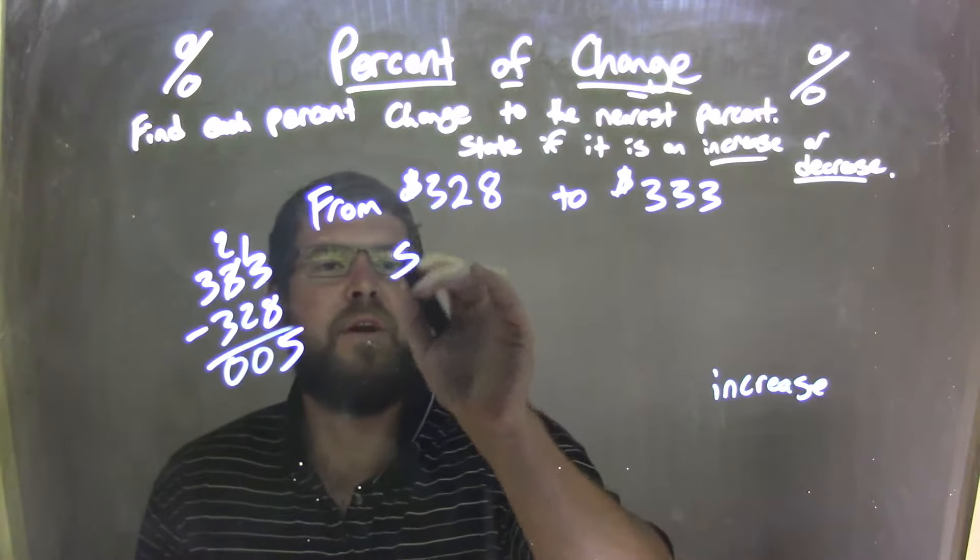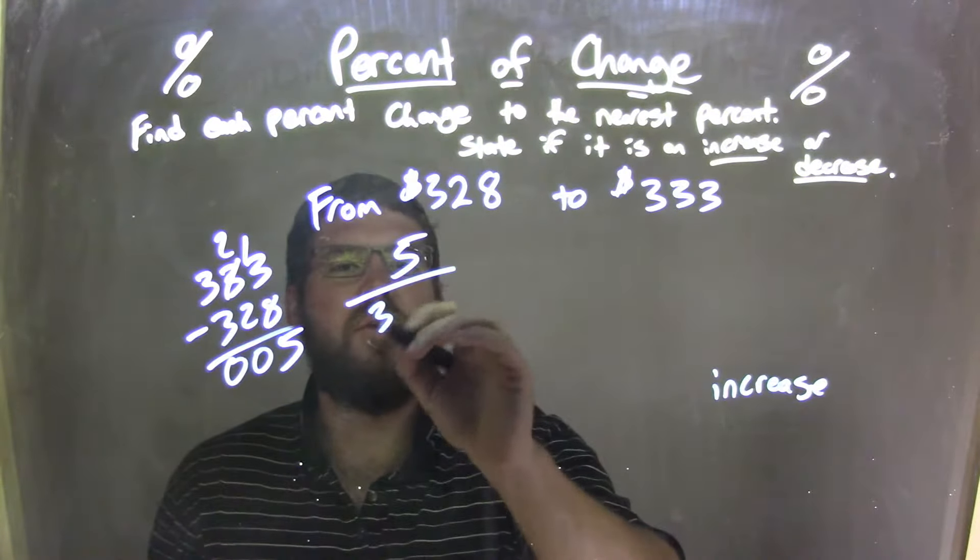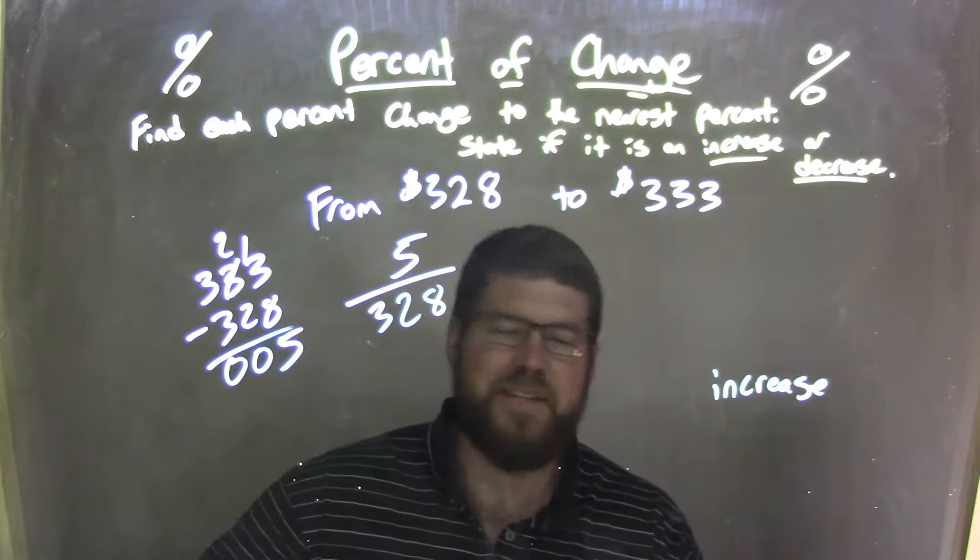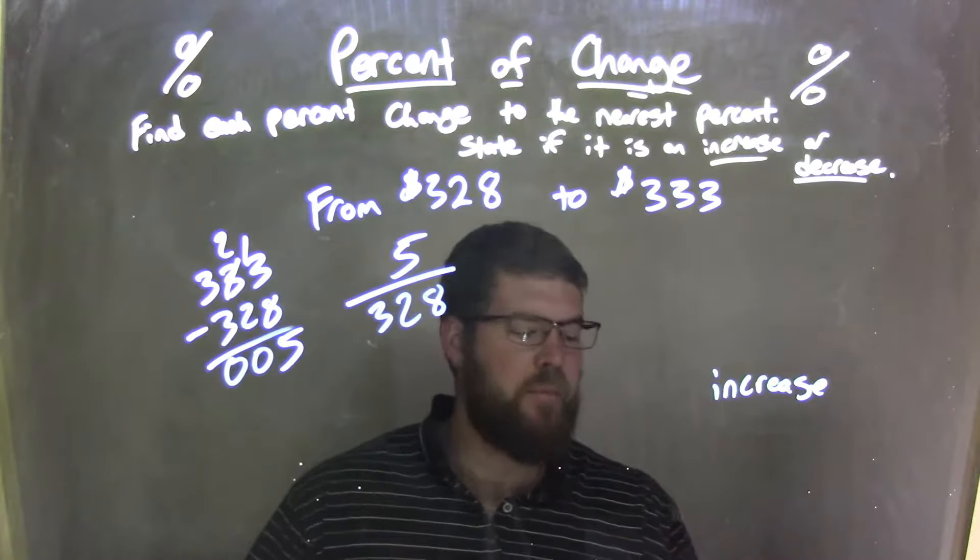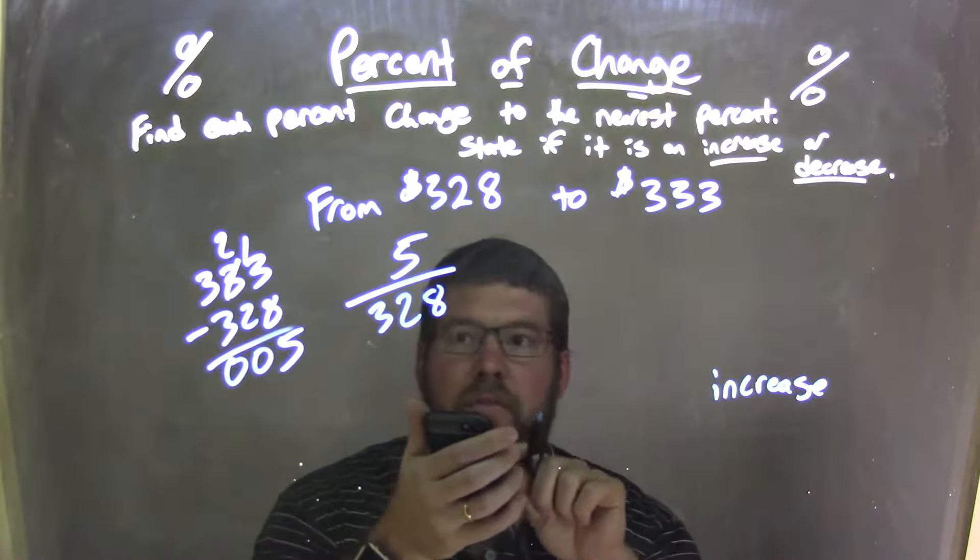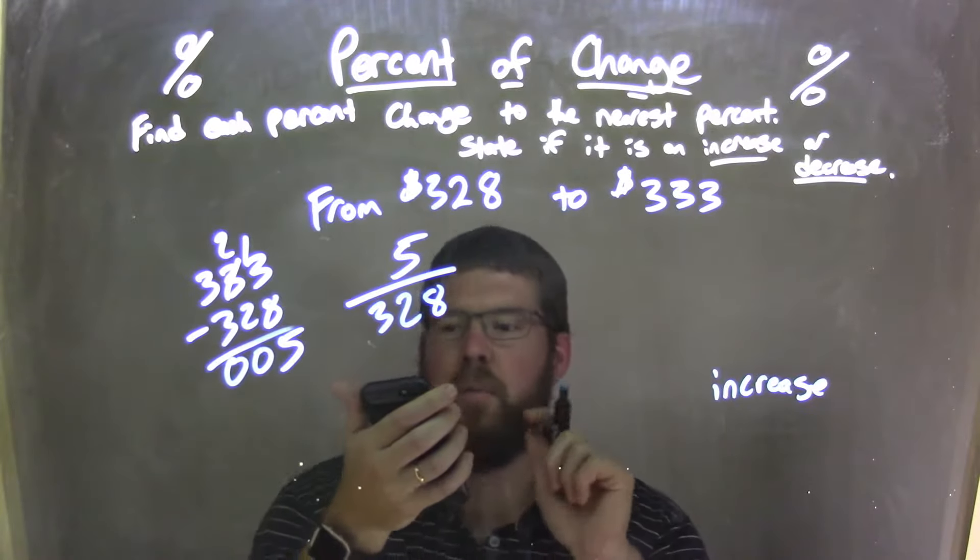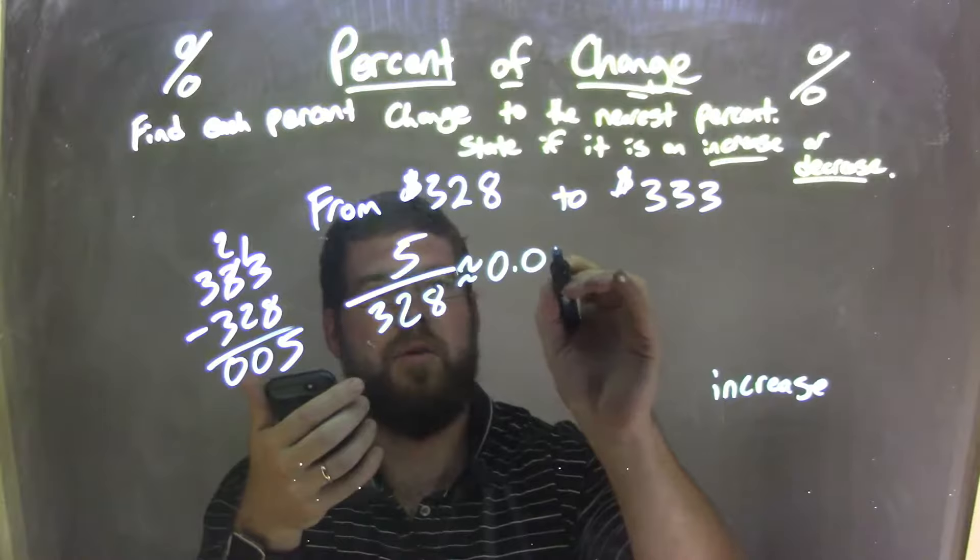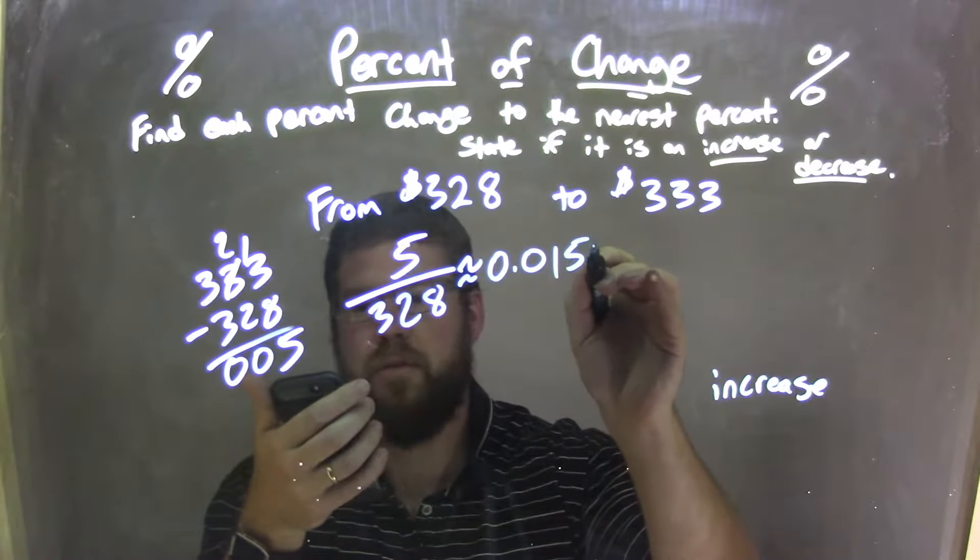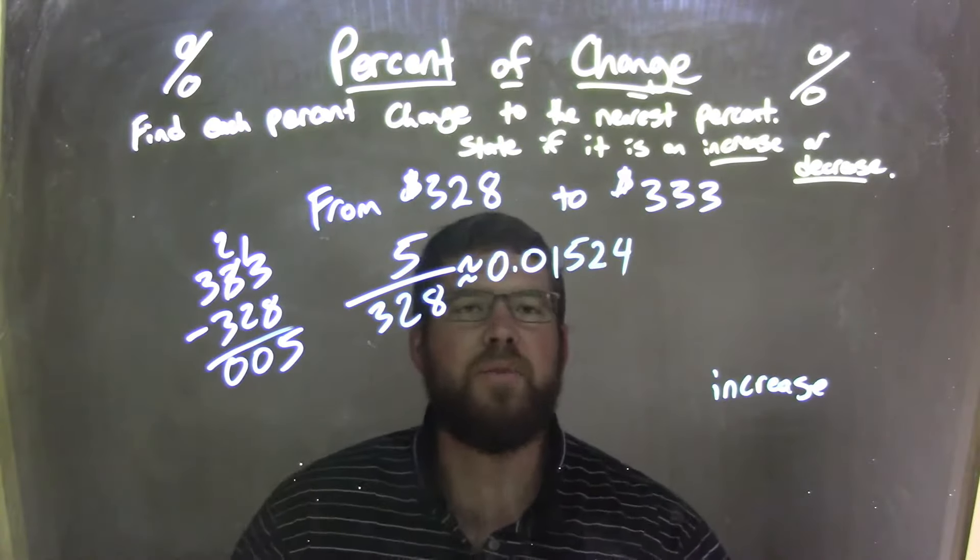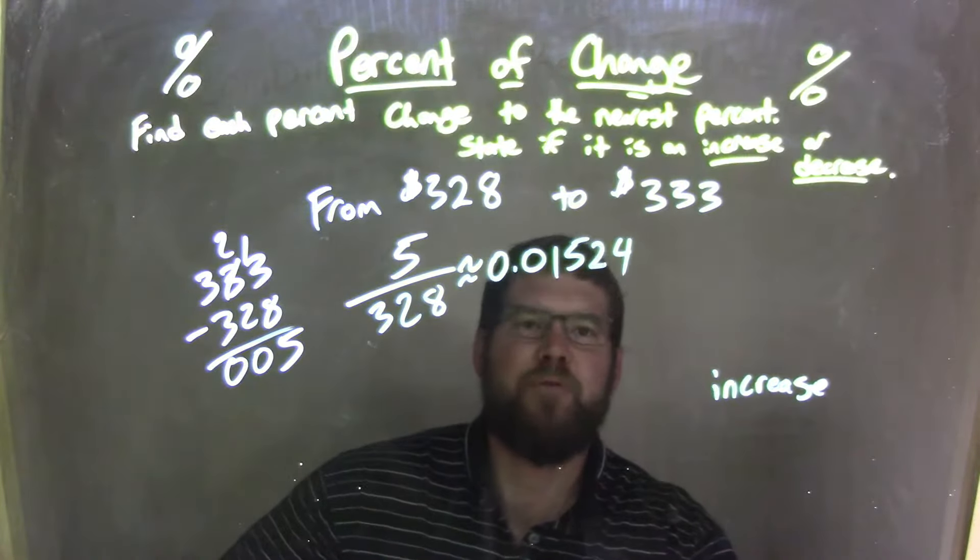So we take that number $5, and we divide it by our first number, $3.28. Now I know it's a very small number divided by a large number. It's going to be a very small decimal percent here. Well, let's go figure out what that is. We use our calculator here. $5 divided by $3.28 comes out to be approximately 0.01524.